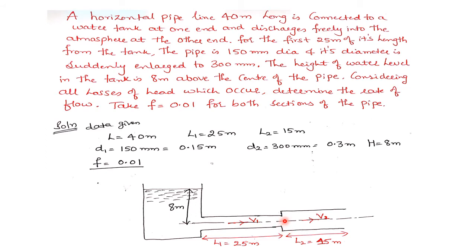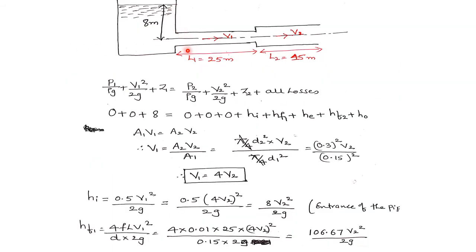After the sudden enlargement, from that point to the end of the second pipe section, loss of head due to friction takes place again. At the outlet point, where the fluid discharges freely into the atmosphere as a free jet, loss of head at the exit of the pipe takes place. So in total: loss at entrance, friction loss in pipe 1, loss due to sudden enlargement, friction loss in pipe 2, and loss at exit.